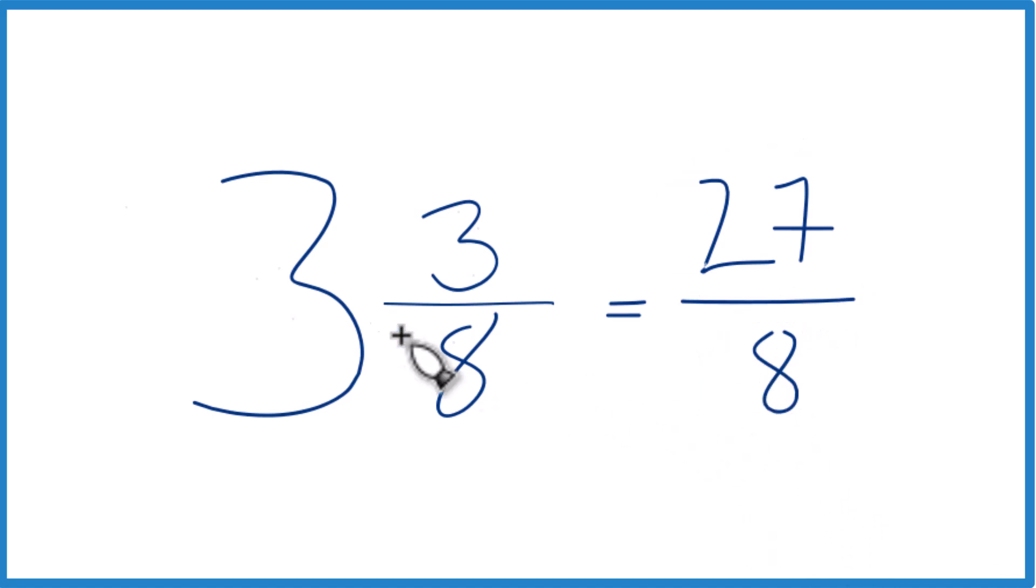So let's do it again. 3 times 8, 24. 24 plus 3, that gives you the 27. Bring the 8 across, and there you have it. 27 eighths.